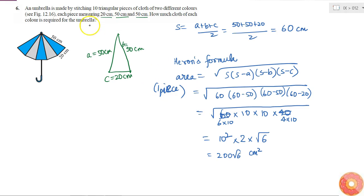So what is told to me, there are 10 triangular pieces of two different colors. That means that 5 are of one color and 5 are of another color.